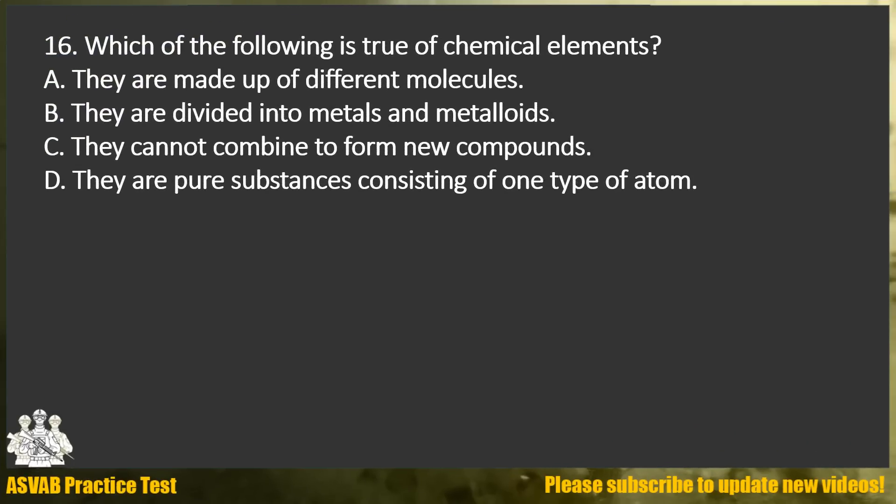Question 16. Which of the following is true of chemical elements? A. They are made up of different molecules. B. They are divided into metals and metalloids. C. They cannot combine to form new compounds. D. They are pure substances consisting of one type of atom.